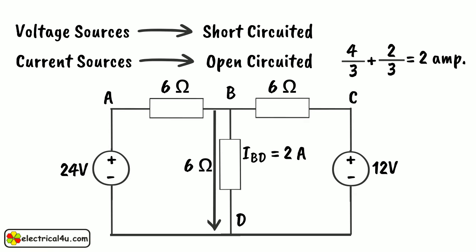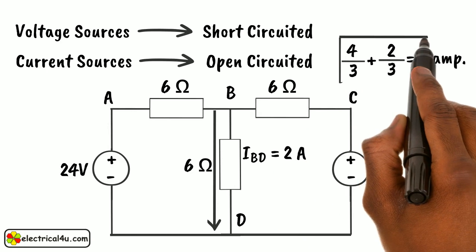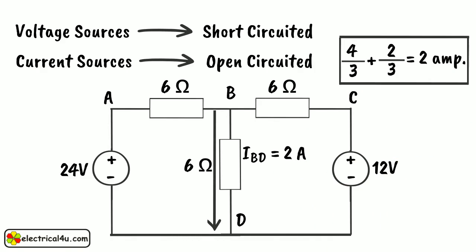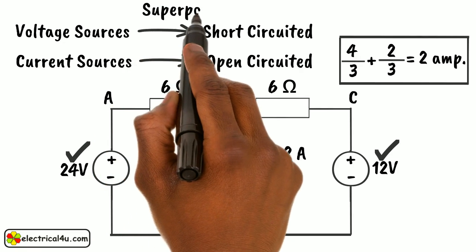So, it is proved that the current flowing through the branch is the algebraic sum of currents that would have been produced by each source taken separately, with all other sources replaced by their respective internal resistances. This is the Superposition Theorem.